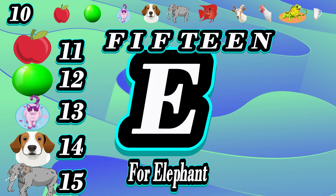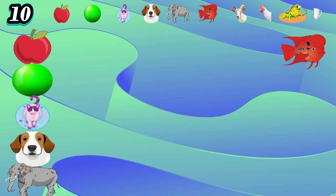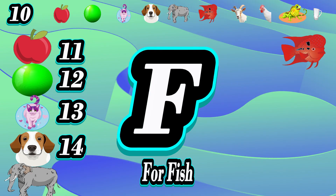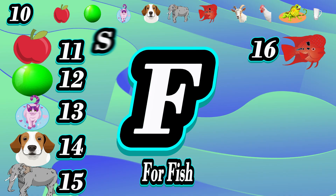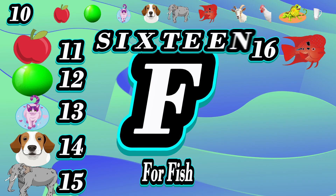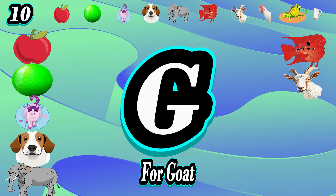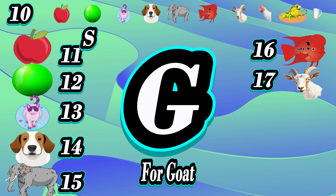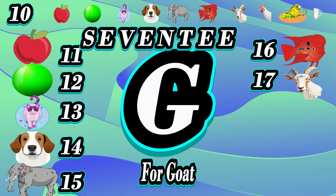15, fifteen. F for fish — 11, 12, 13, 14, 15. 16, sixteen. G for goat — 11, 12, 13, 14, 15, 16.